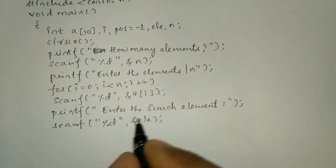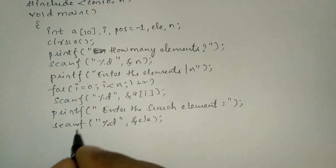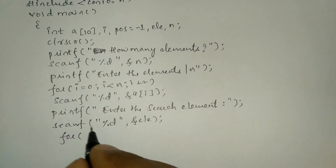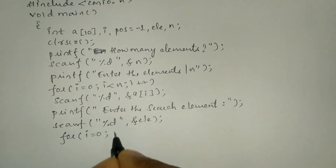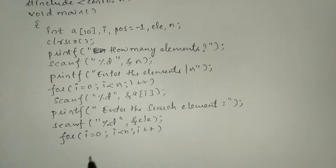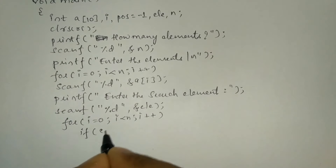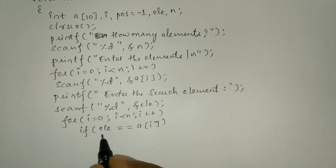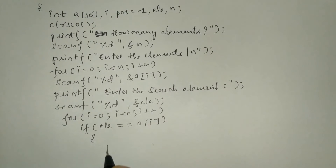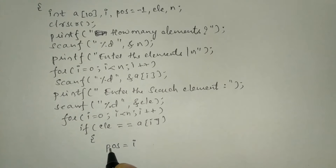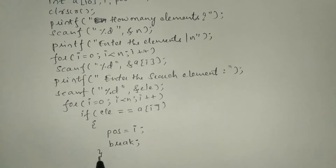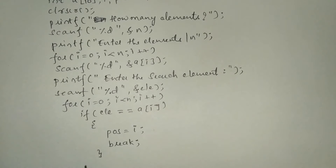After receiving the search element, we will iterate through each and every block of the array. Using a for loop — for i equals 0, i less than n, i plus plus — we check the condition: if element is equal to a[i], then initialize the index number i to the variable position. Once it is found, the control has to come out of the loop, so we write a break statement, then the closing brace for the if statement.